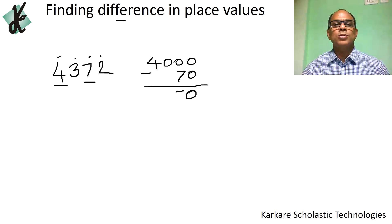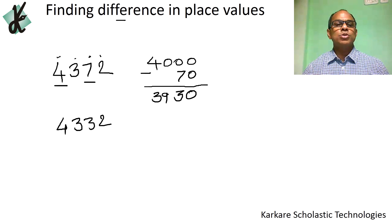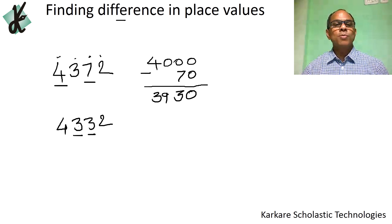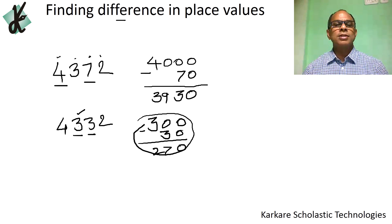Now the difference means subtraction, so 4000 minus 70 gives us 3930. Next, if the digits are the same — take 4332 — what is the difference between the place values of the two 3s? The place value of the first 3 is 300 and the second is 30, so the answer is 270.